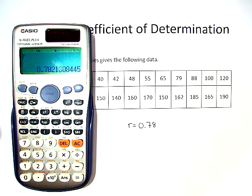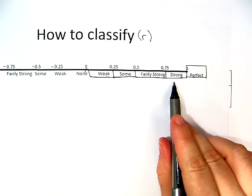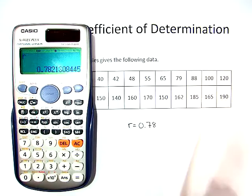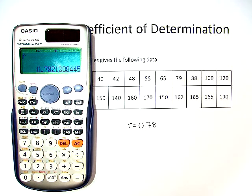r is 0.78. Now, on our line, that means, if we were to look at this, that 0.78 is still a strong relationship.